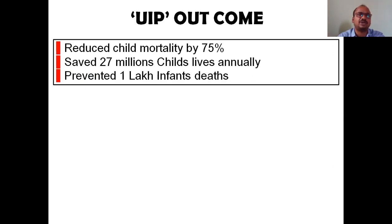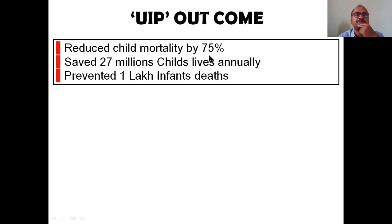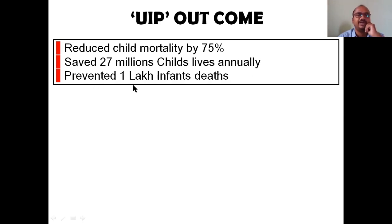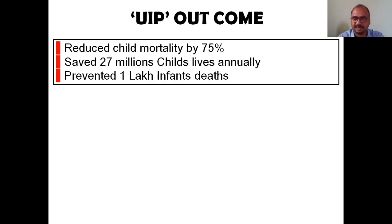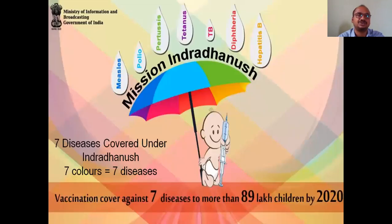UIP outcome: child deaths were reduced by 75%. It saved 27 million child lives annually and prevented 1 lakh infant deaths. Without this program, India would have faced a very dangerous situation.